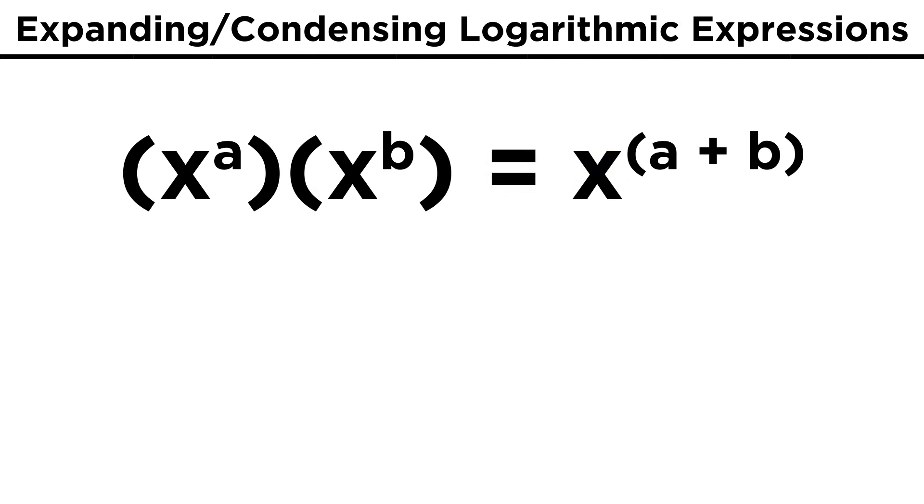Now let's learn some properties that will allow us to do operations with logarithmic terms. These properties will correspond to properties of exponents that we already know. For example, we know that X to the A times X to the B equals X to the A plus B, which allows us to combine terms, or split one term up into two.